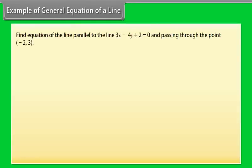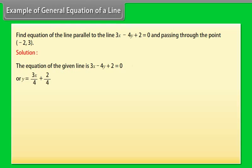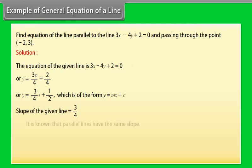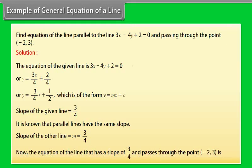Example: Find the equation of the line parallel to 3x − 4y + 2 = 0 and passing through the point (−2, 3). Solution: The given line 3x − 4y + 2 = 0 can be written as y = (3/4)x + 1/2, so the slope is 3/4. Since parallel lines have the same slope, the required line also has slope m = 3/4. The equation of the line with slope 3/4 passing through (−2, 3) is 3x − 4y + 18 = 0.